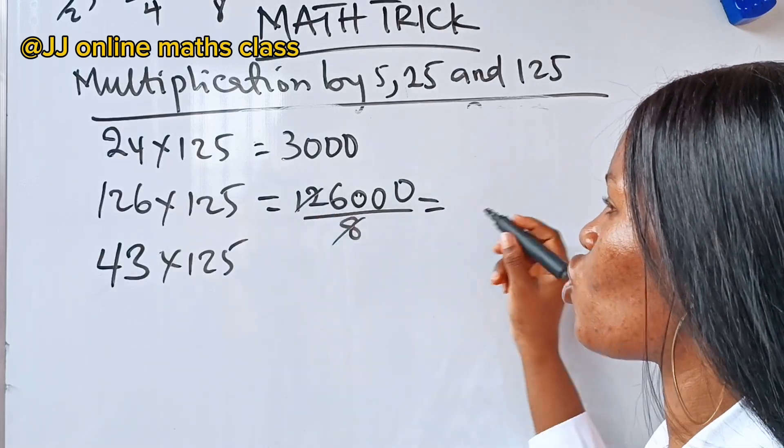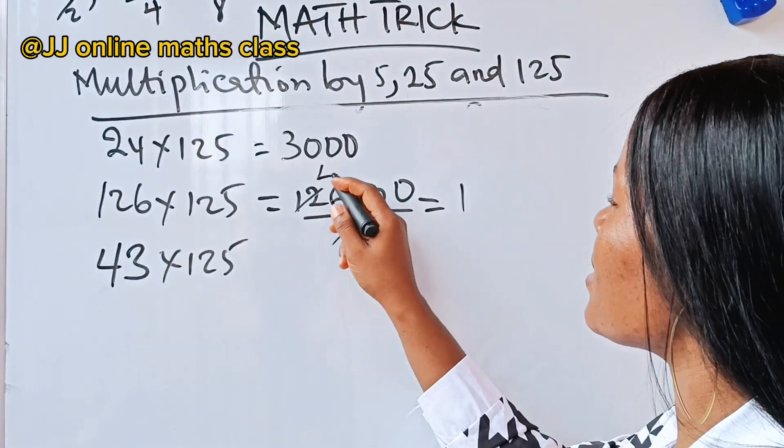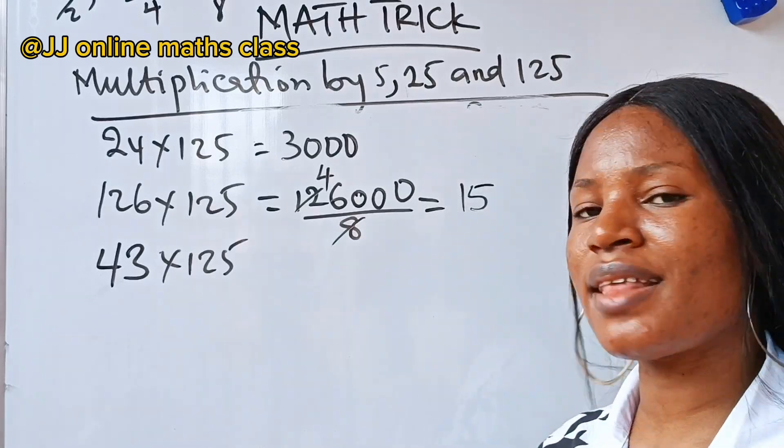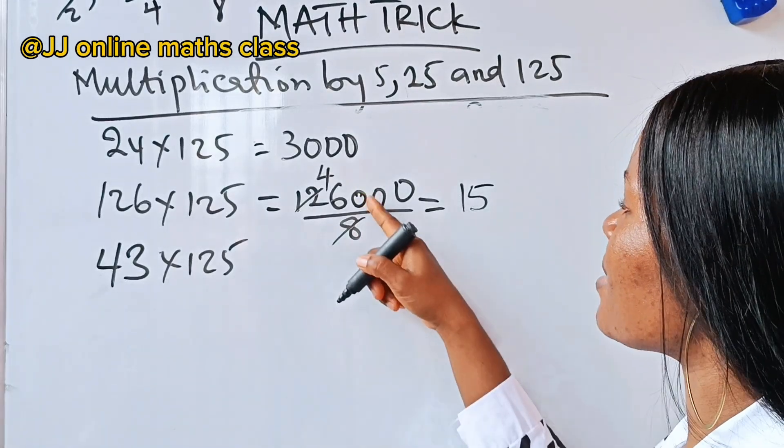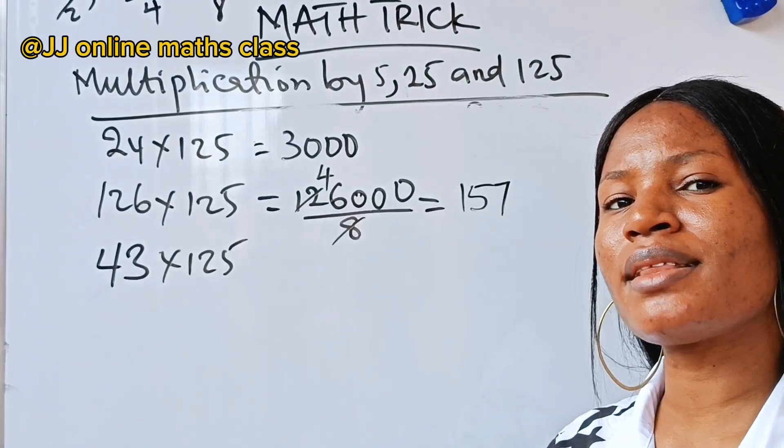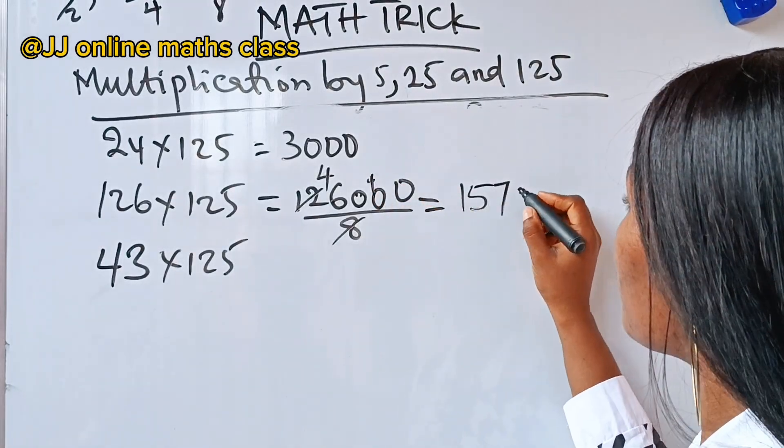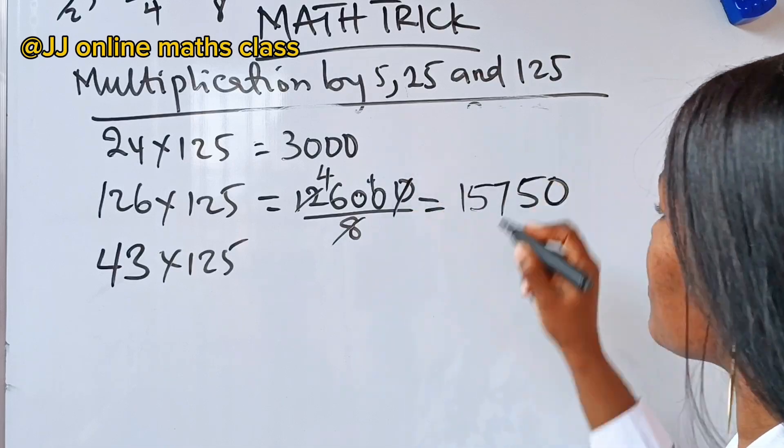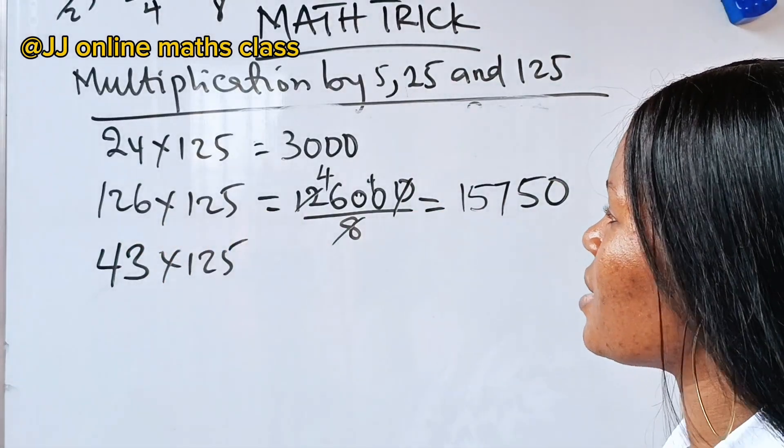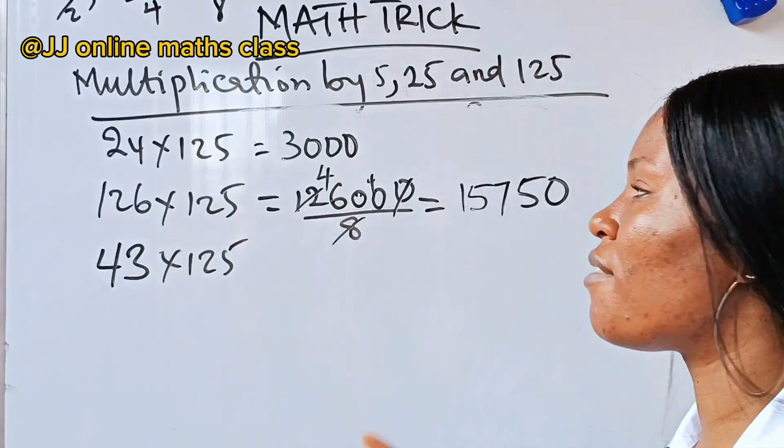When 8 divides 12, you will have 1 remainder 4. When you divide 46, you will have 5 remainder 6. If you divide 60, you will have 7 remainder 4. If you divide 40, you will have 5. Divide 0, you will have 0. So, that implies that 126 multiplied by 125 is 15,750.